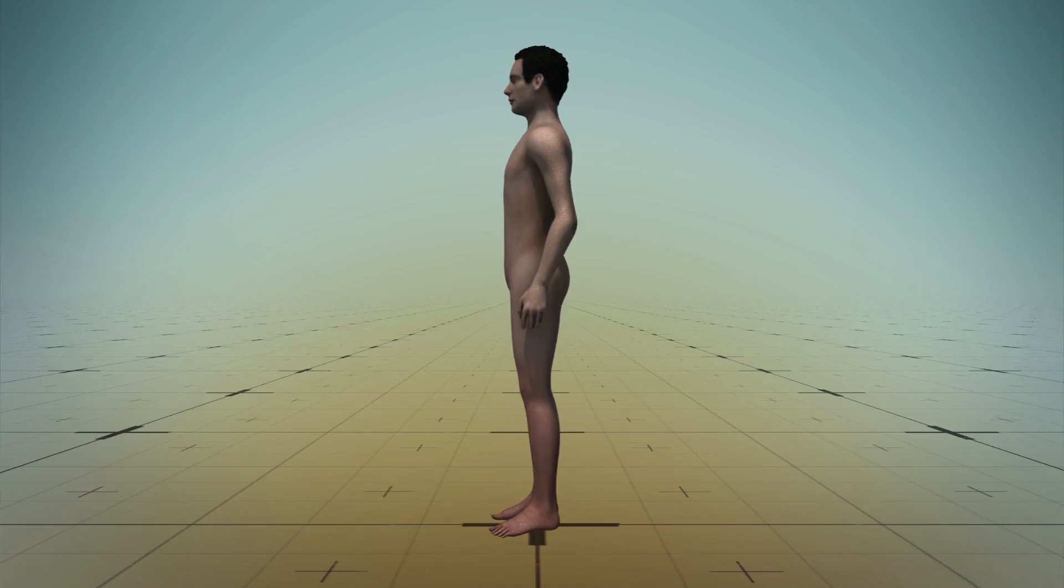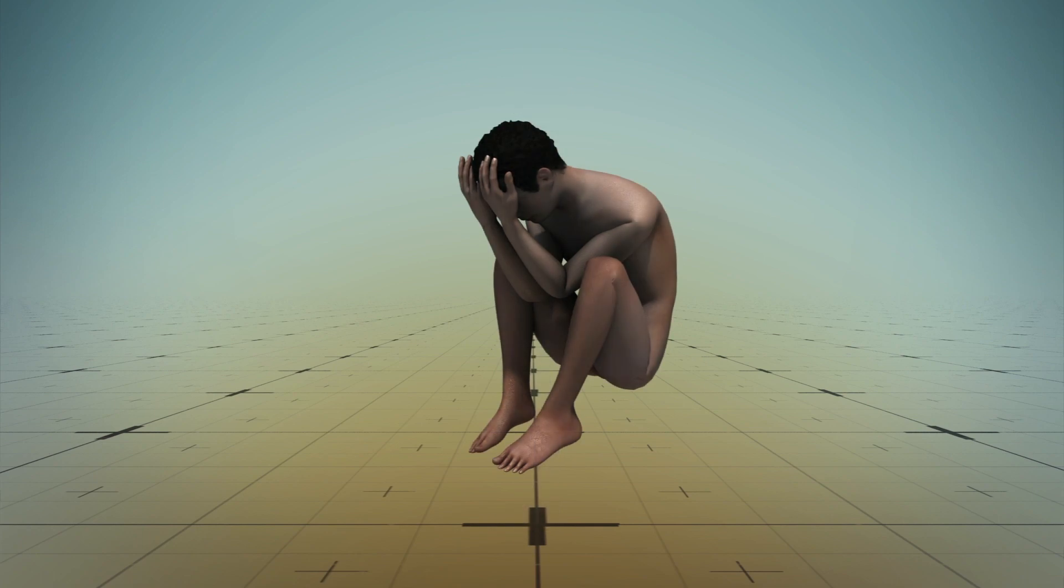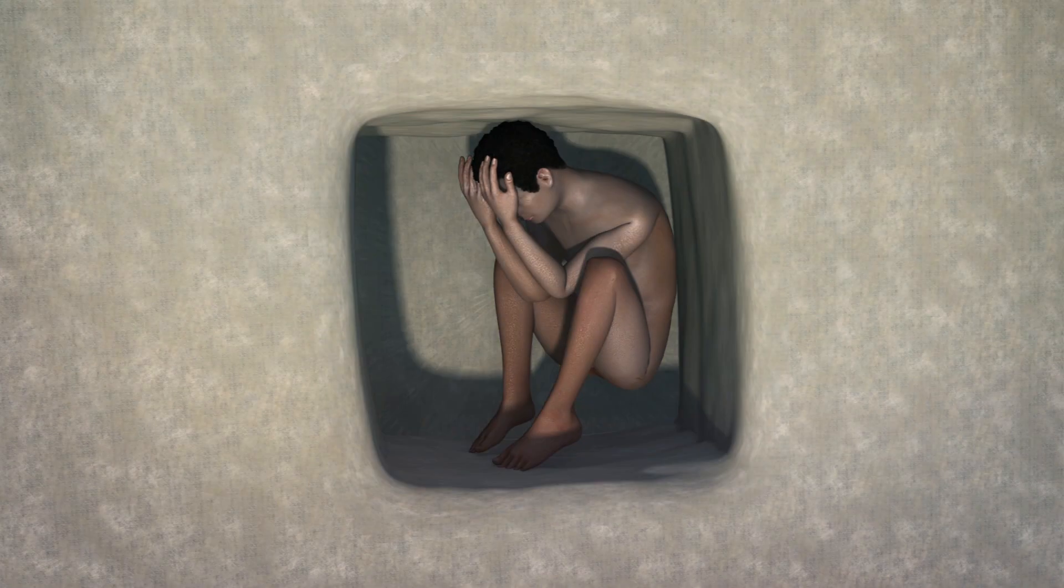According to RT, natural mummification in ancient Egypt involved placing the bodies of the deceased in shallow pits in the fetal position where they gradually dried in the sand.